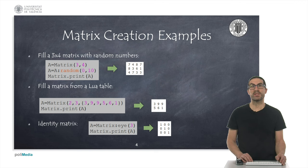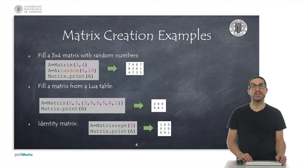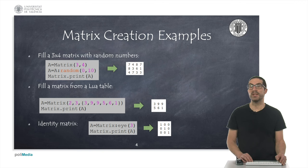We will now see a set of examples to understand how to work with these classes. Here we see three examples to create matrices. The first example creates a matrix filled with random numbers. In the second example, we create a matrix filled with a Lua table. And in the third example, we create an identity matrix.